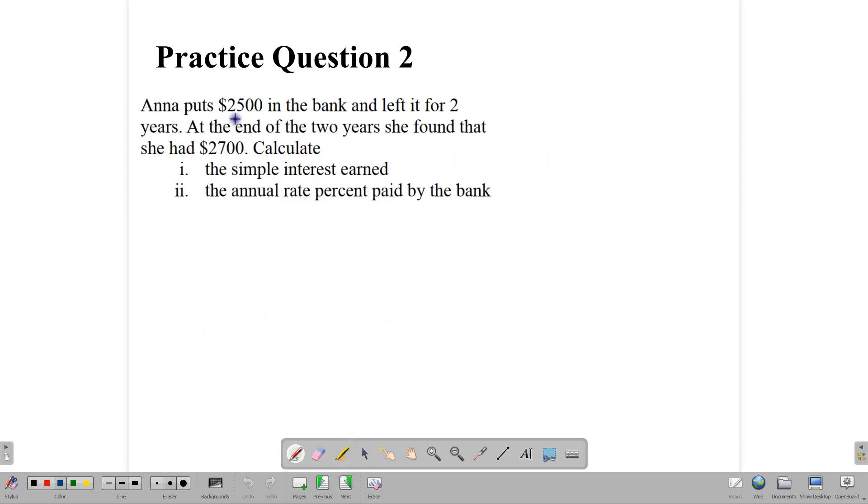Let's look at another example. Here we see Anna puts $2,500 in a bank and left it for two years. At the end of the two years, she found that she had $2,700. So she got some money on her investment. In other words, she got some interest. So here we are going to first calculate the interest earned. Well, she started with $2,500 and got $2,700. So the interest earned, which is a simple calculation here, would be $2,700 minus $2,500, which tells us that she got an interest of $200 on her account.